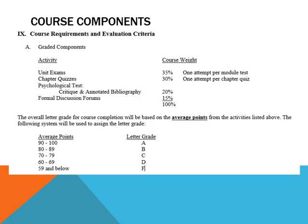The course components include unit exams, chapter quizzes or homework quizzes, the psychological test critique, the psychological test annotated bibliography, and formal discussion forums. Unit exams account for 35% of your final grade, chapter quizzes 30%, the psychological test critique and annotated bibliography 20%, and formal discussion forums 15%. Letter grades are assigned as follows: 90–100% is an A, 80–89 a B, 70–79 a C, and 60–69 a D.